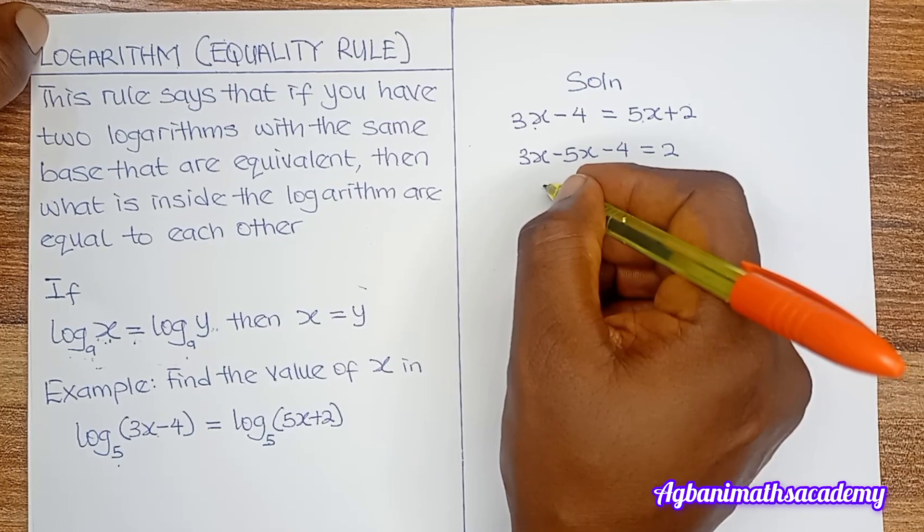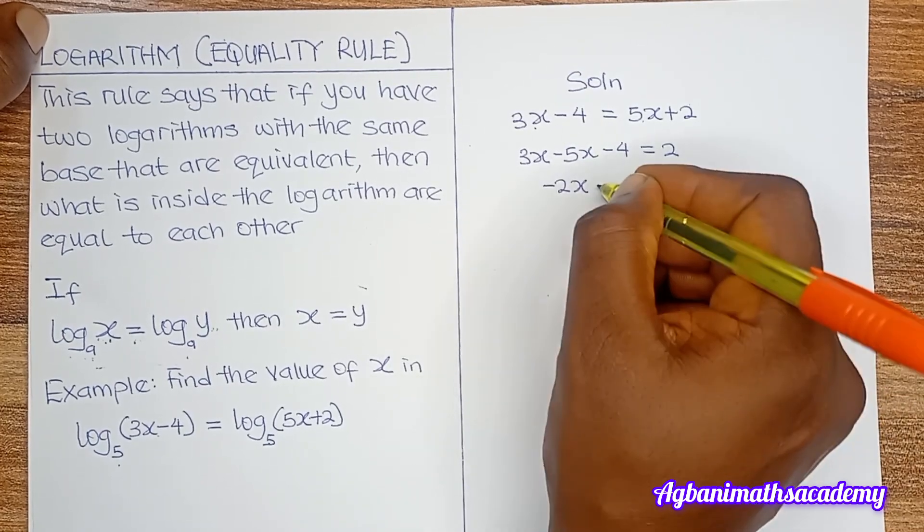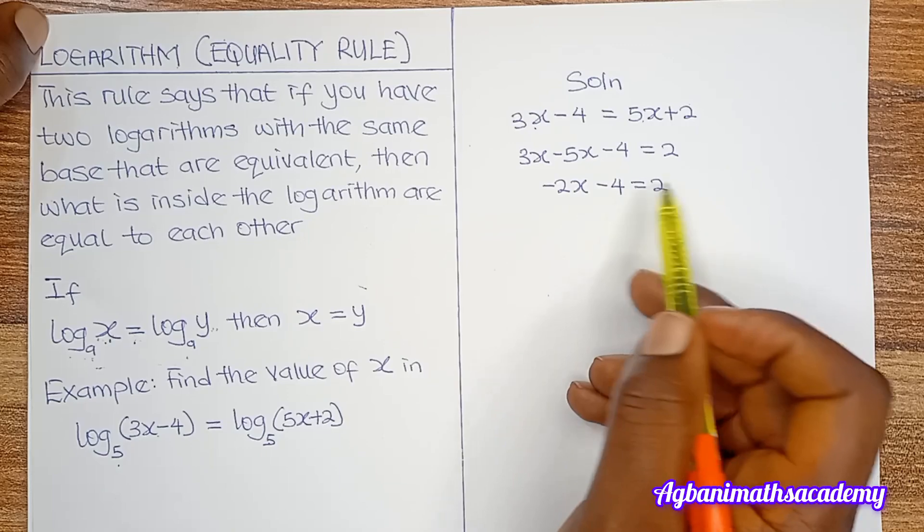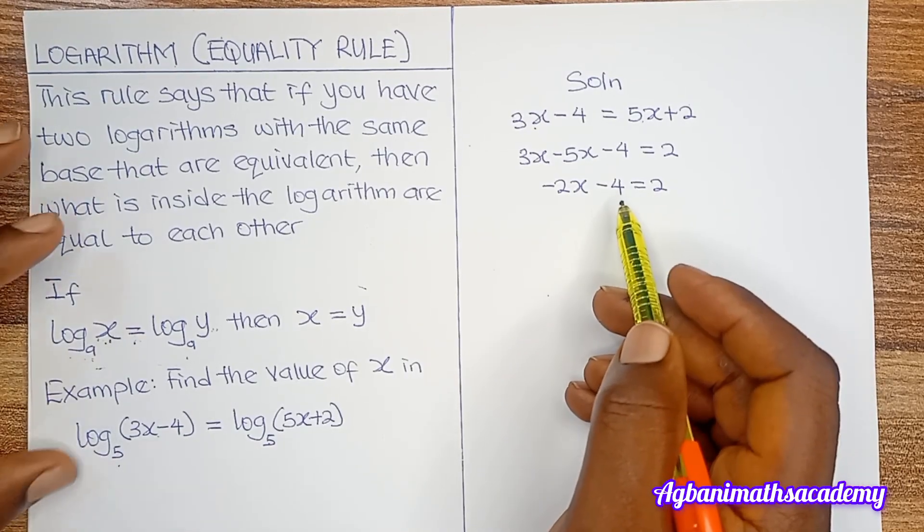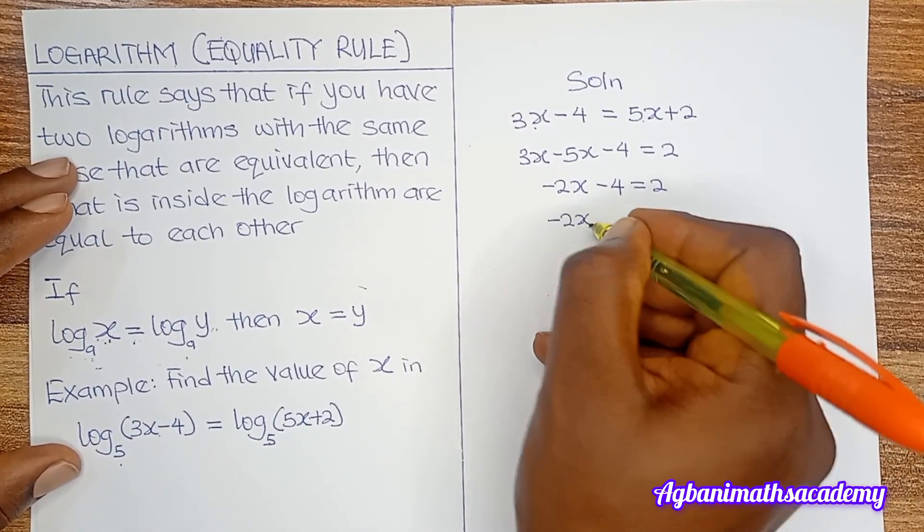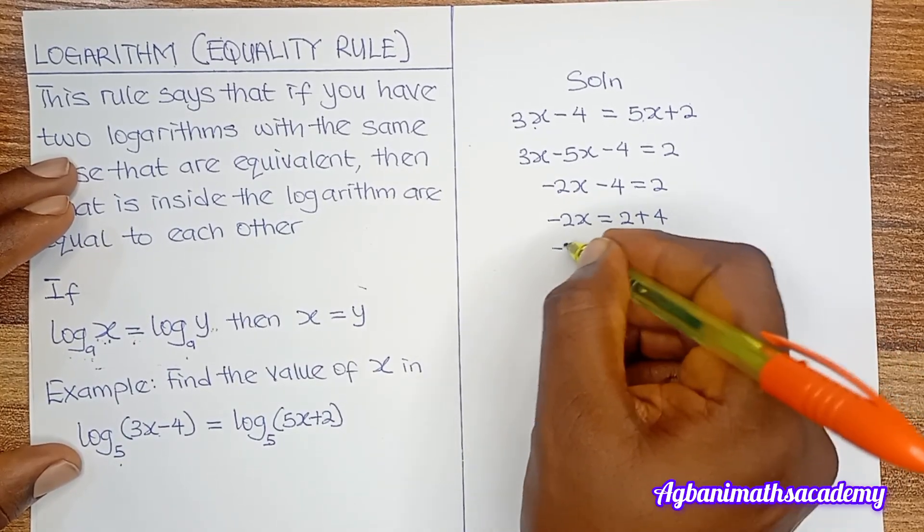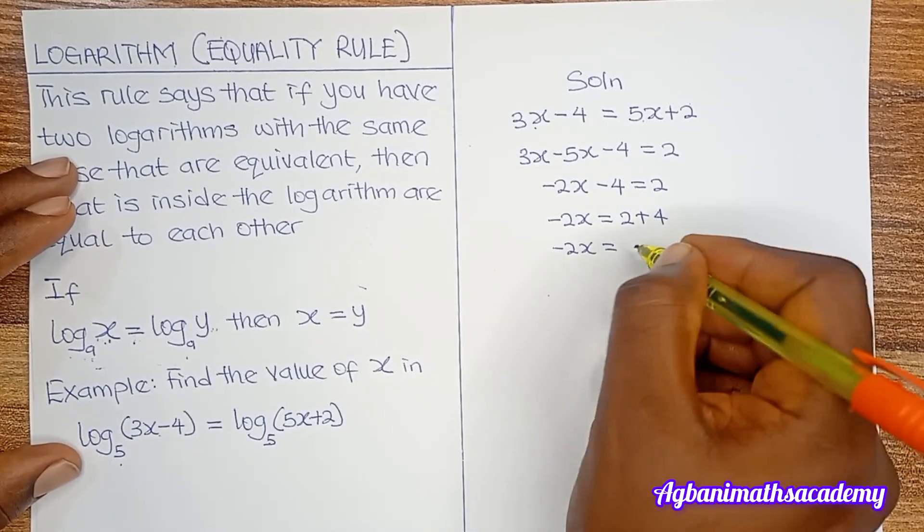3x minus 5x is going to give us minus 2x minus 4 is equal to 2. Next we move minus 4 to the right. The negative sign will change to positive. So this will give us minus 2x is equal to 2 plus 4. Minus 2x is equal to 6.